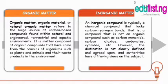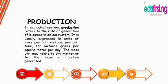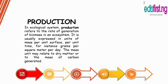Now let's continue with production in the ecosystem. In an ecological system, production refers to the rate of generation of biomass in an ecosystem. It is usually expressed in units of mass per unit surface per unit time — for instance, grams per square meter per day. A mass unit may relate to dry matter or to the mass of carbon generated.